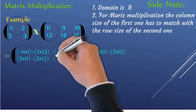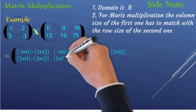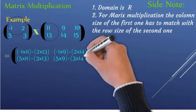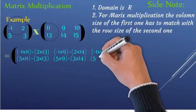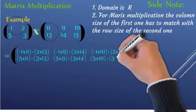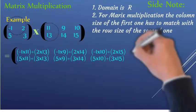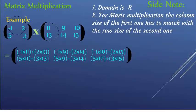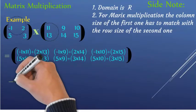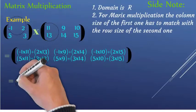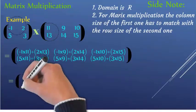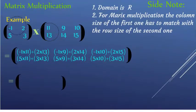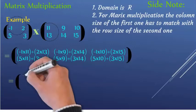Let's see: the number of columns of the first one matches the number of rows of the second one. So we compute: minus one times eleven plus two times thirteen, minus one times nine plus two times fourteen, minus one times ten plus two times fifteen — that's the first row. Second row: five times eleven plus three times thirteen, five times nine plus three times fourteen, five times ten plus three times fifteen.